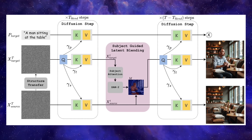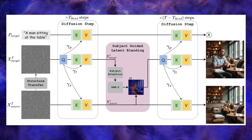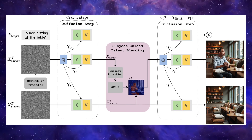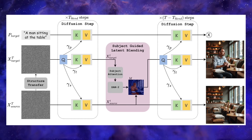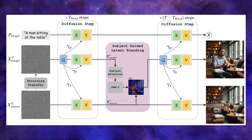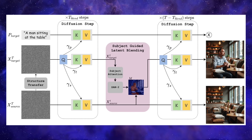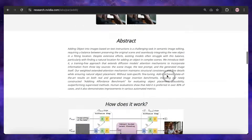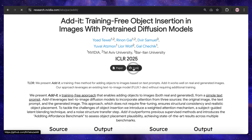The secret sauce is a weighted extended attention mechanism — the model constantly negotiates between preserving the original image, following your text command, and making sure the new object makes sense in the evolving scene. It also uses a structure transfer step to create a blueprint of the original image's layout, ensuring the final edit maintains the same perspective and composition. Finally, a subject-guided latent blending process uses a segmentation model to create a precise mask around the new object, flawlessly blending it in while preserving every fine detail in the background. And this is an open-source project — the team has released the code on GitHub so you can try it out for yourself.